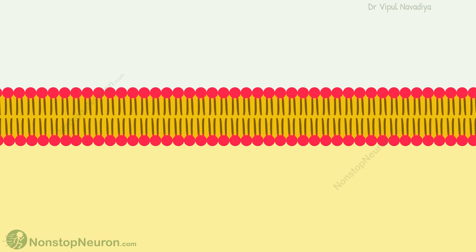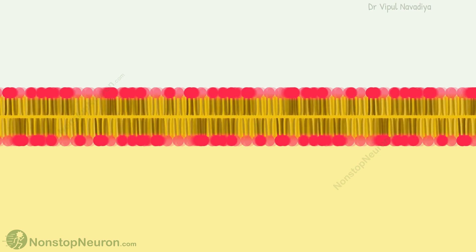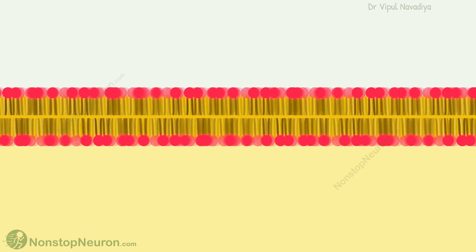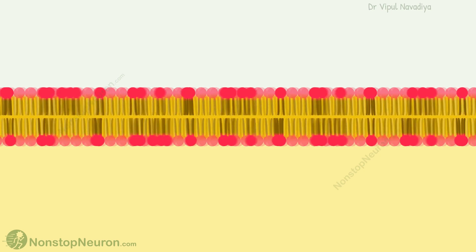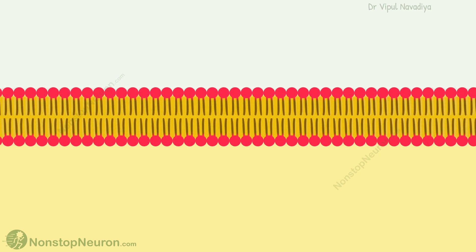An interesting thing about this arrangement is that the phospholipid molecules do not make any strong bonds with each other. These molecules are actually freely moving along the plane of the layer. Thus, the membrane is actually in a liquid state, not a solid one. This is called the fluid mosaic model of the membrane.